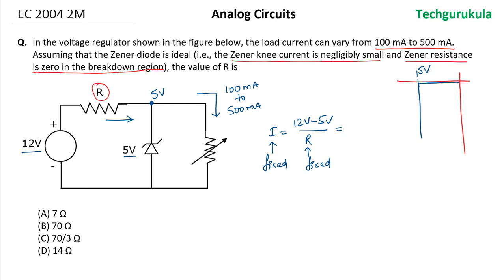Now how much should this current be? We know a maximum current that can flow through the load resistor is 500 milliamperes. When it is taking 500 milliamperes, the least amount of current that the Zener diode can take is 0, as we have seen that the knee current is negligibly small.